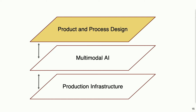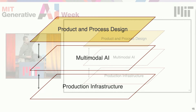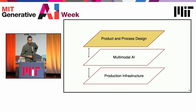Here's a simple way of thinking about it. We have three layers, and we need to think about how to connect the product and process design in an integrated fashion to an emerging production infrastructure that will be and must be more digital through the use of multimodal AI tools. I'm not going to talk much about the middle, but I'll talk about the top and the bottom.